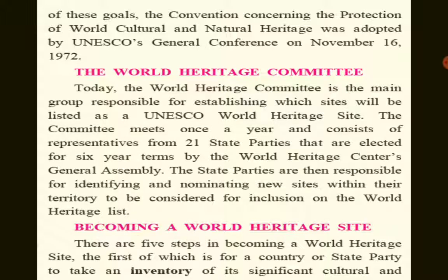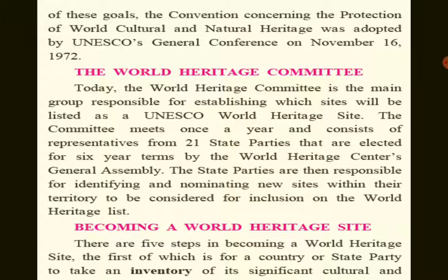The state parties are then responsible for identifying and nominating new sites within their territory to be considered for inclusion on the World Heritage List. There are five steps in becoming a World Heritage Site. The first is for a country or state party to take an inventory of its significant cultural sites.